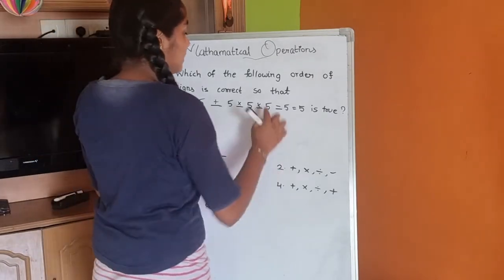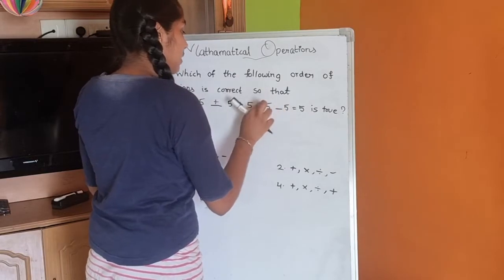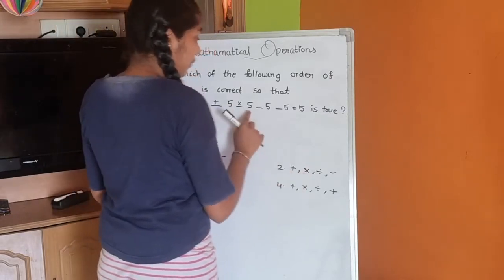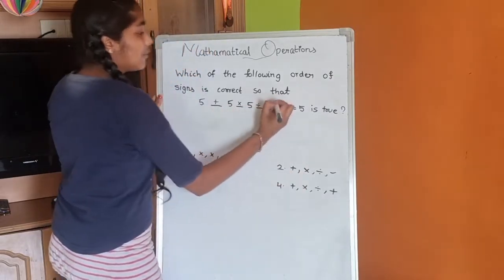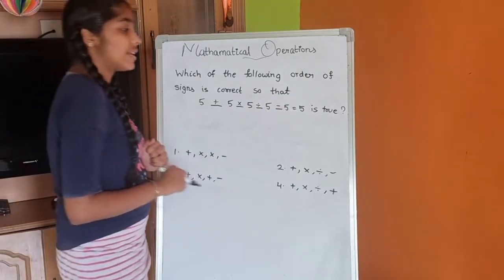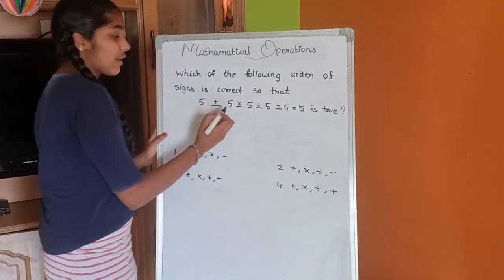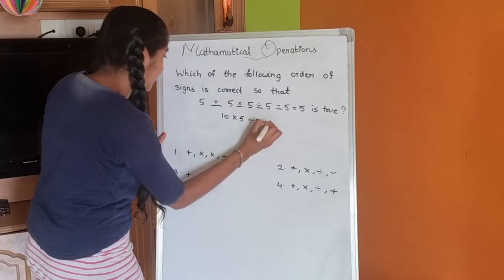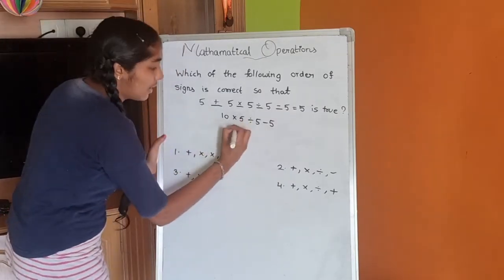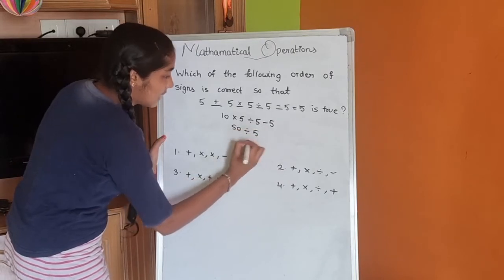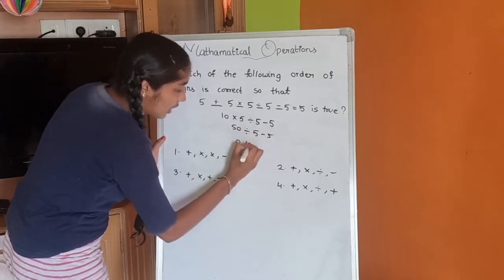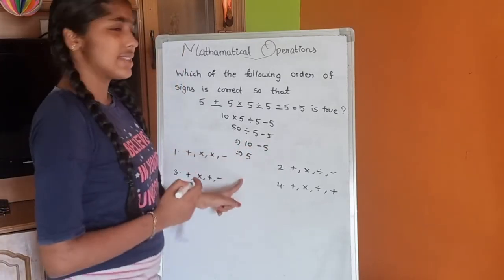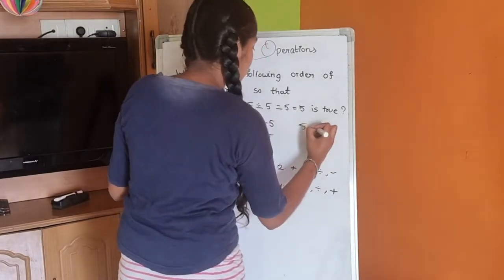Now let us check the second option: five plus five, into five, divided by five, minus five, and we need to get the result as five. Five plus five gives us ten; ten into five is fifty; fifty divided by five gives us ten — wait, then ten minus five gives us five. So LHS equals RHS: five equals five. This is true.